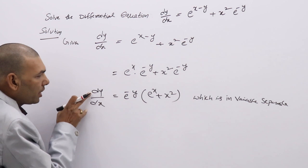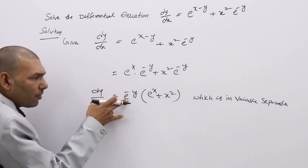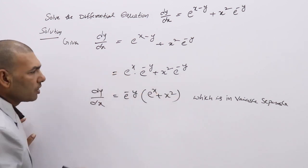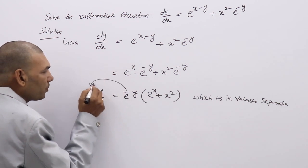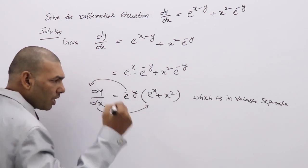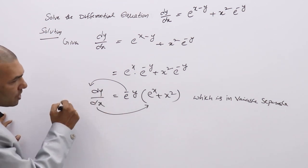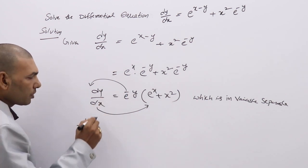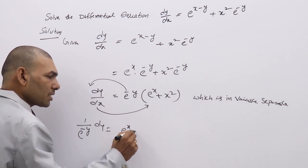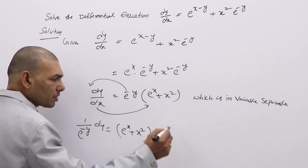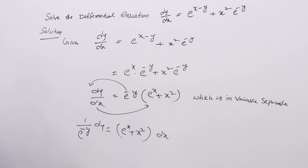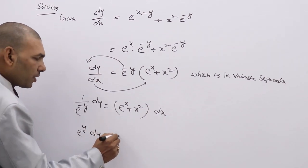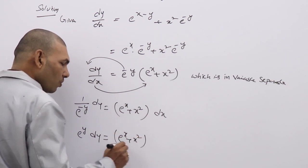When it is in variable separable form, get y terms on one side and x terms on another. Keep in mind: dy should be in the numerator, dx should be sent to the RHS. So, take e⁻ʸ to this side — that becomes 1/e⁻ʸ = eʸ — giving: eʸ dy = (eˣ + x²) dx.